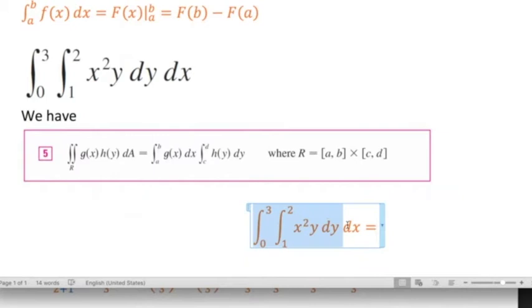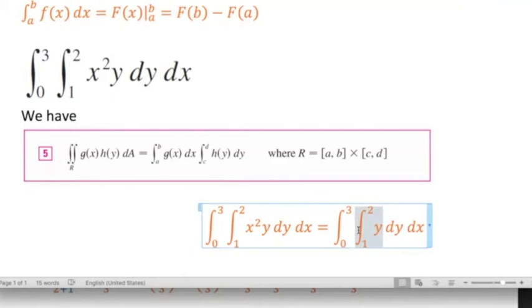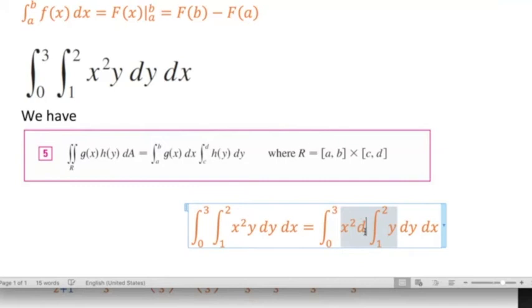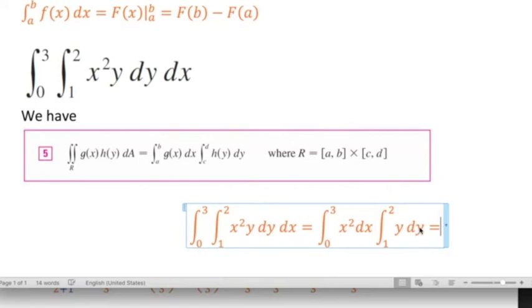So here they are separable, then we will have the same thing, but we can take X squared and put it in here. The X and Y, dY will be integrated. So now we have two different, two separated integrals, one in X variable, only the second one in Y variable. So we can do both of them separately.